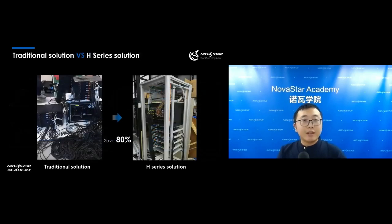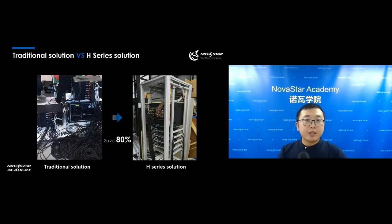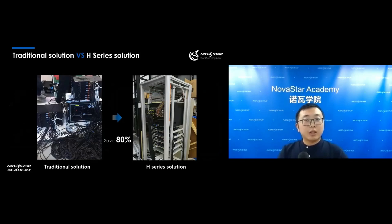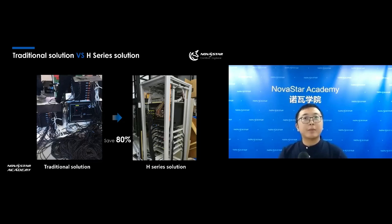As you can see in this picture, this is a comparison of the wiring. The H-Series solution will help our customers save 80% of cables, including HDMI or DVI cables, USB cables, and power cables, which improves the compatibility and stability of the system.